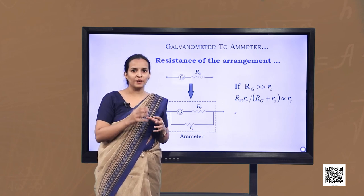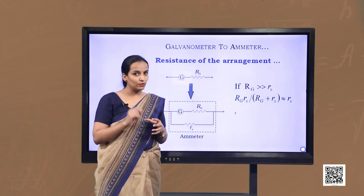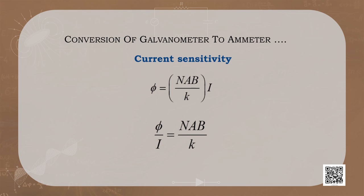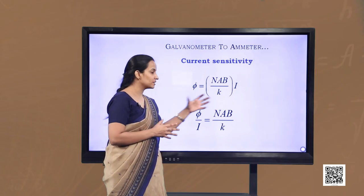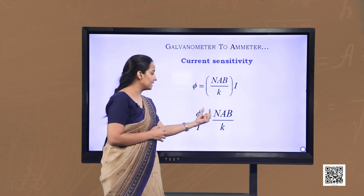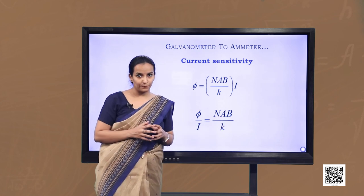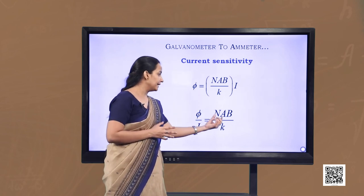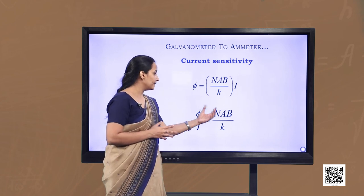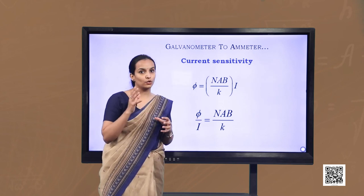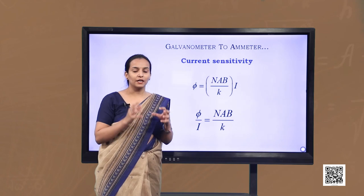The ammeter is calibrated to measure current in a certain range by calculating the appropriate shunt resistance. The current sensitivity of the galvanometer is defined as the deflection per unit current: φ/I = NAB/K. We can increase sensitivity by increasing the number of turns N, increasing the area of cross-section, increasing the magnetic field strength of the permanent magnets, or decreasing the torsional constant K — all done at the manufacturing level.